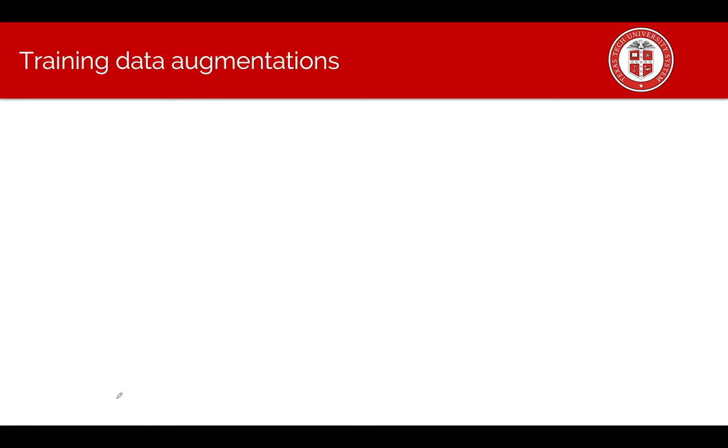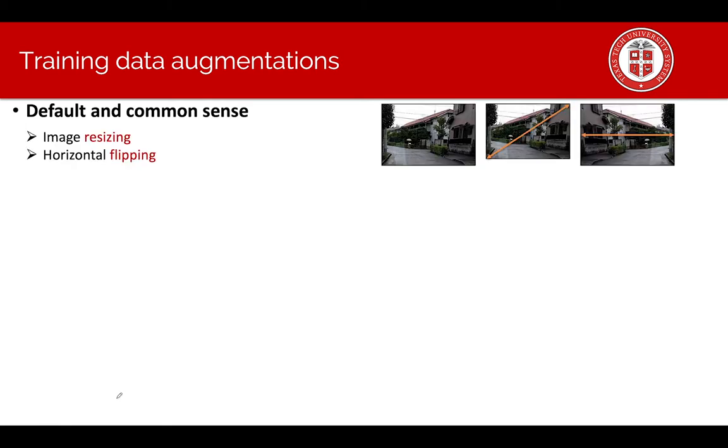The next exploration direction is data augmentation. We stick with default common sense augmentation. They are image resizing and horizontal flipping. The next augmentation type we experimented is generating artificial patches.